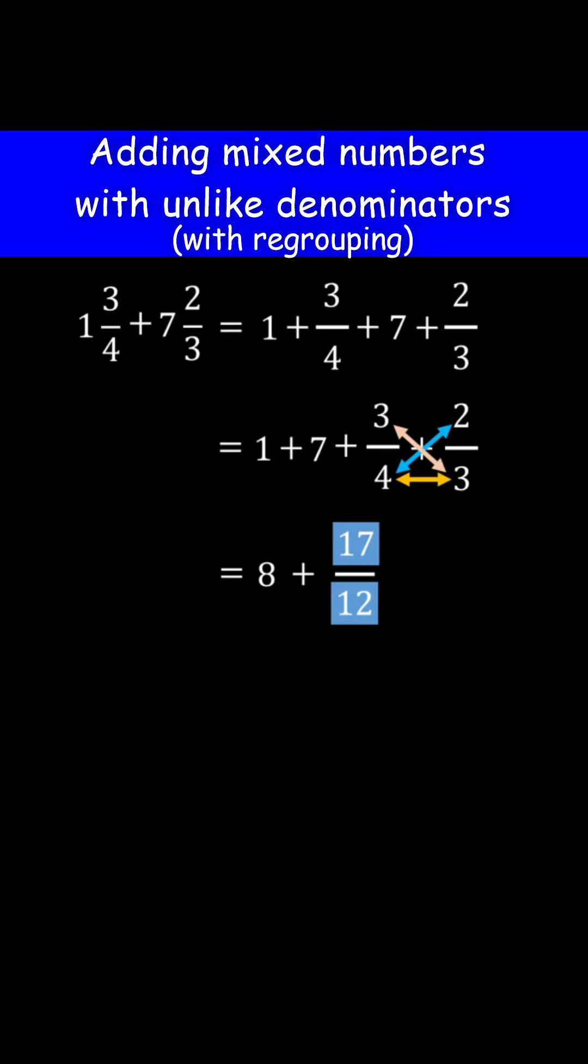So we need to write it as a sum of a whole number and a proper fraction. We are doing this because the fraction part of a mixed number is always a proper fraction. 17 is the same as 12 plus 5. This is the same as 12 over 12 plus 5 over 12. 12 over 12 is 1.